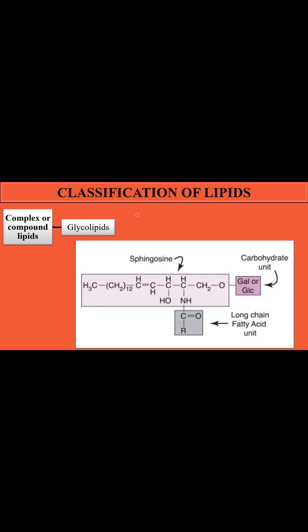Glycolipids are simple lipids combined with a carbohydrate unit. This carbohydrate unit may be galactose, glucose, or any other carbohydrate molecule. Because of the carbohydrate unit attached with the simple lipids — which contain an alcohol and a long chain of fatty acids — they form the complex molecule known as glycolipids.